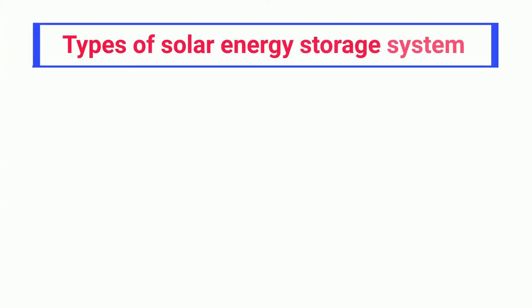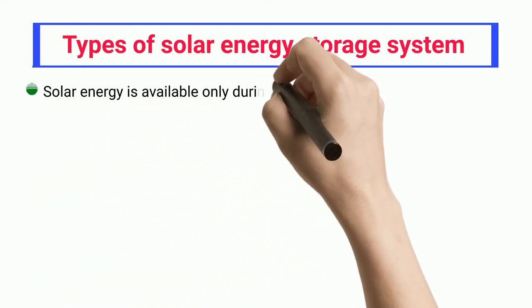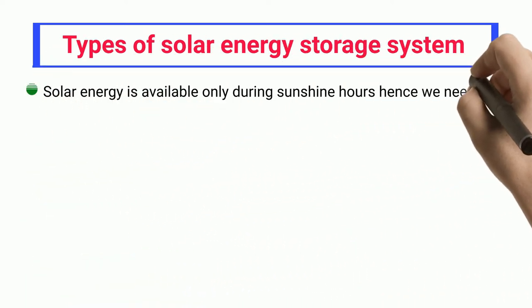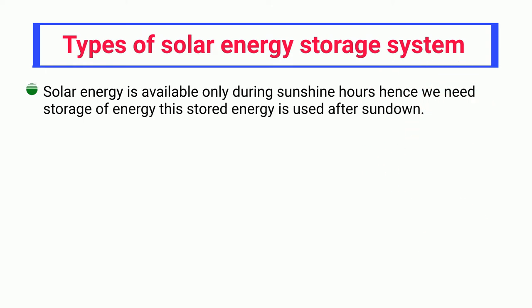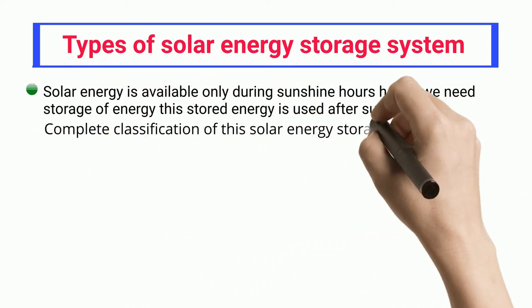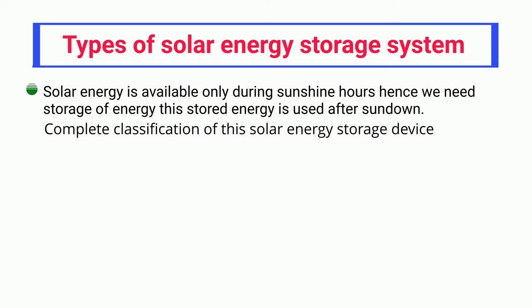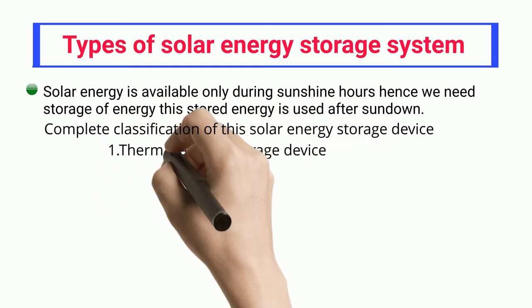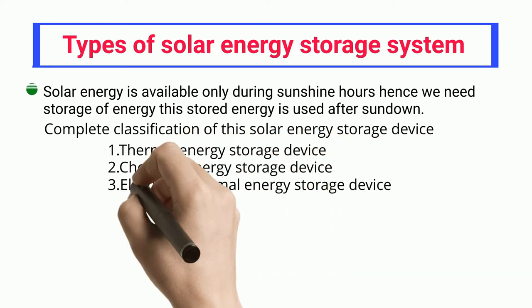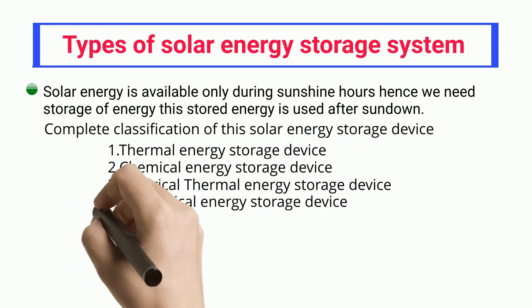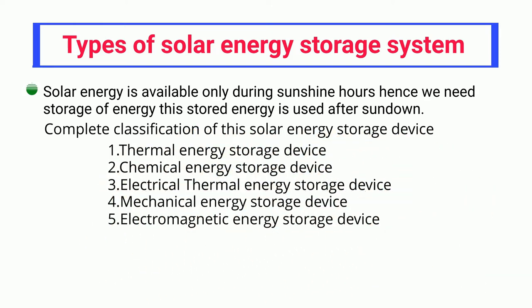Types of solar energy storage systems: solar energy is available only during sunshine hours, so we need to store it for use after sundown. The complete classification of solar energy storage devices includes: thermal energy storage devices, electrical thermal energy storage devices, developmental energy storage devices, mechanical energy storage devices, and chemical energy storage devices.